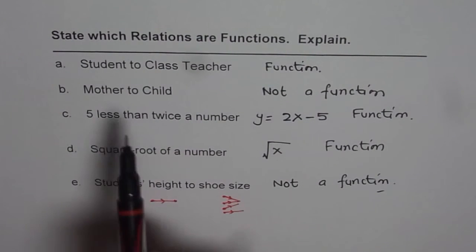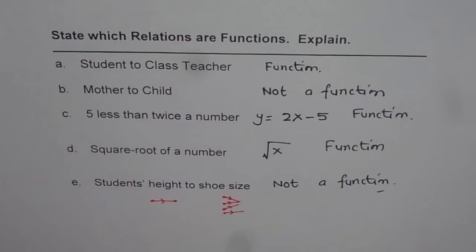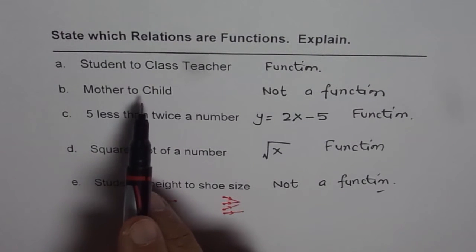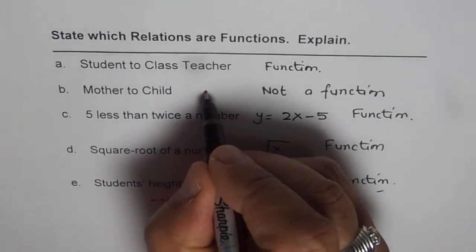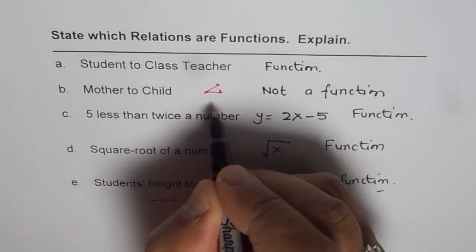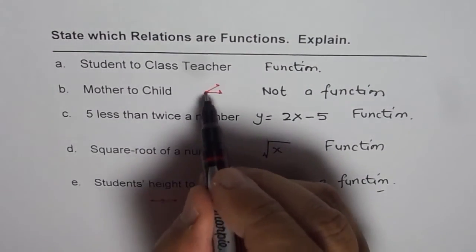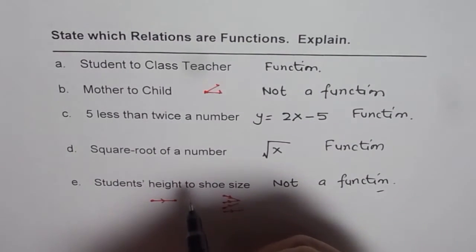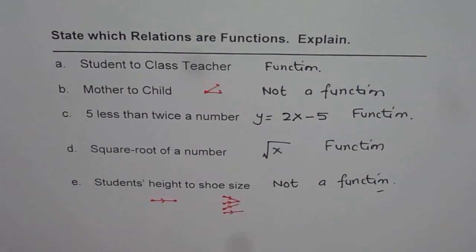Now mother and child. Mother can be associated with more than one child. Therefore this is not a function. This association is kind of like this. So if there are two children, then the mother is associated with more than one. Therefore this is not a function.